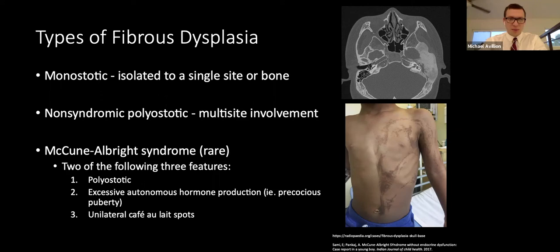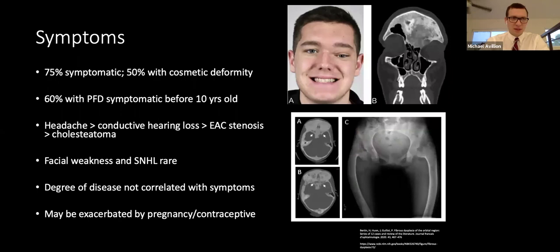The endocrine problems of McCune-Albright syndrome are related to G-protein activation. The syndrome is named for Donovan McCune and Fuller Albright, who separately described the triad in 1937. Regarding symptoms, 75% are symptomatic and 50% have cosmetic deformity. Limb pain and fracture are typically the first symptoms; patients may have leg length discrepancy or bowing of weakened bone, as seen in the image of an 11-year-old girl.